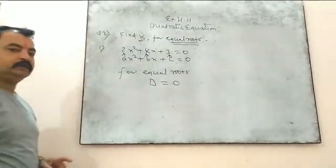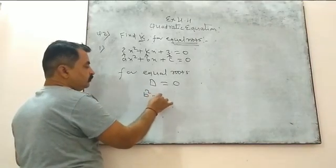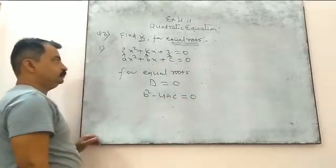What is D here? D for discriminant. What is the value of D? B² - 4AC = 0.